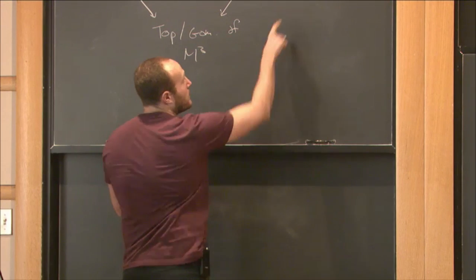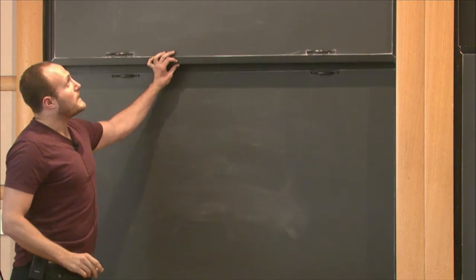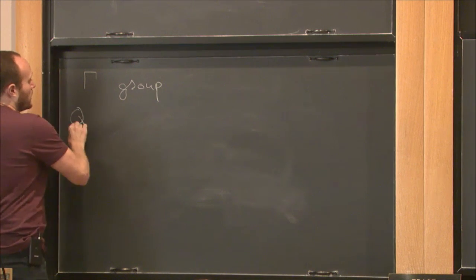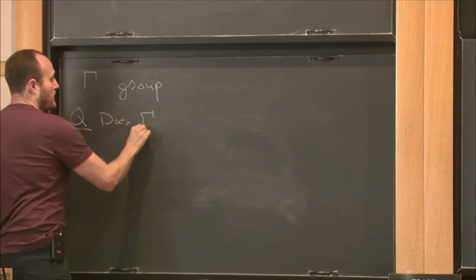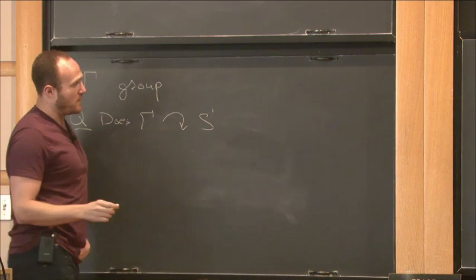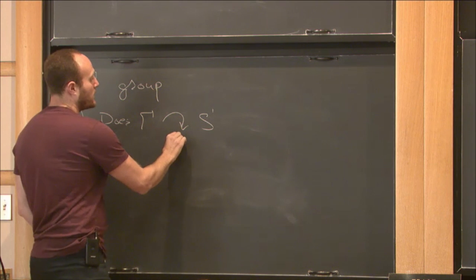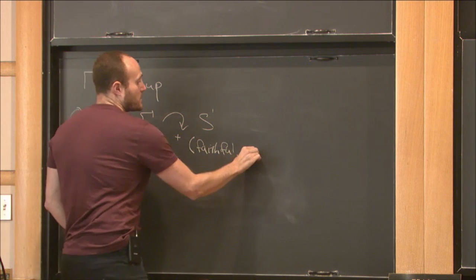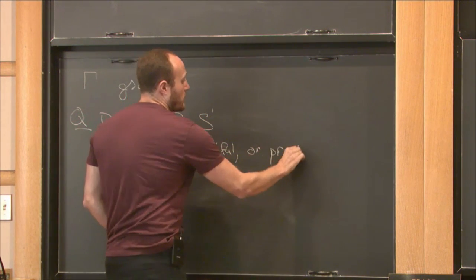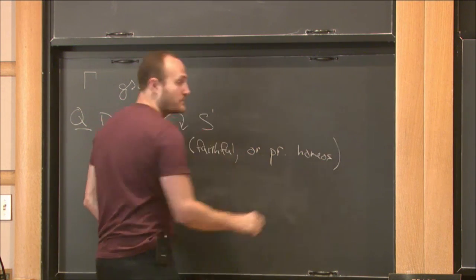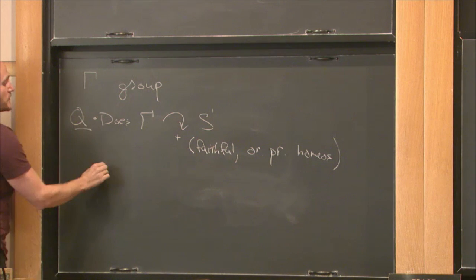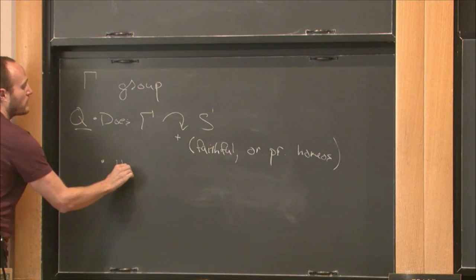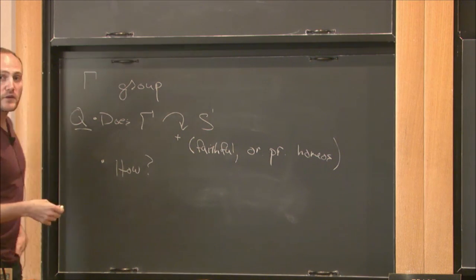All right, so let me start at the end. And for illustration, let's just take a group. So take your favorite group and ask yourself the question, does gamma act on a circle? And what I mean by action, maybe I'll put a little plus here, because I really mean a faithful action by orientation preserving homeomorphisms. And moreover, if it does act on the circle, let's just vaguely ask how, so with what sort of geometric or dynamical or analytical properties.